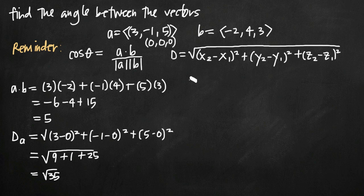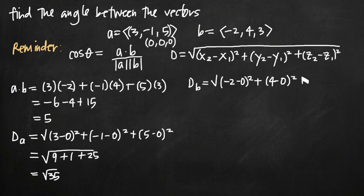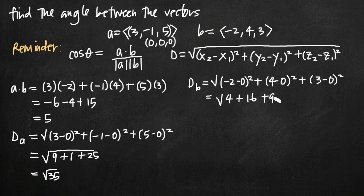Doing the same for b, the length of vector b equals the square root of its components squared. Negative two squared is 4, four squared is 16, and three squared is 9. So we get 4 plus 16 is 20, plus 9 is 29. The length of vector b is the square root of 29.